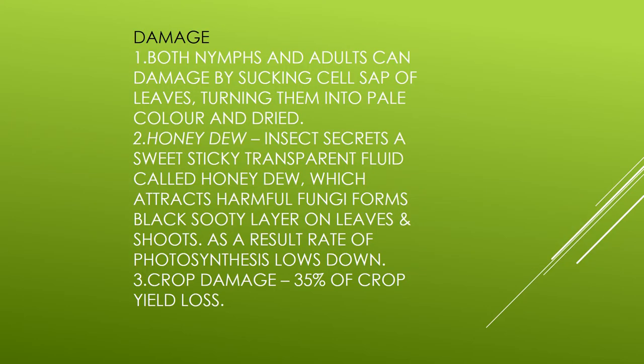About the damage it causes: the main damage is done by nymphs and adults. They suck the cell sap from the leaves of sugarcane. After this, the leaves become pale — pale meaning a light yellowish color.